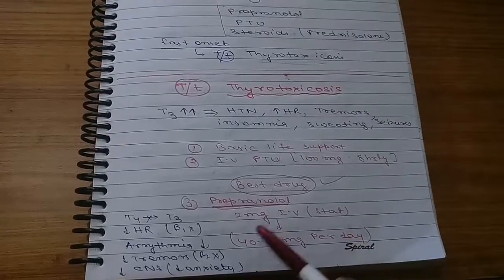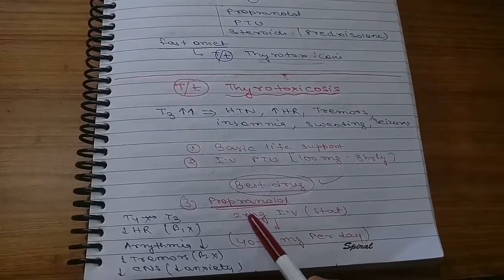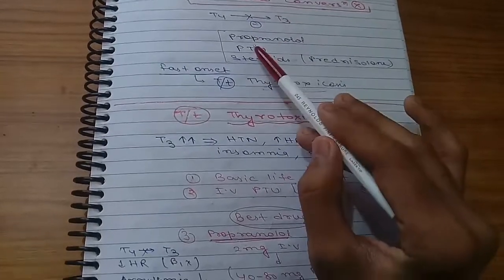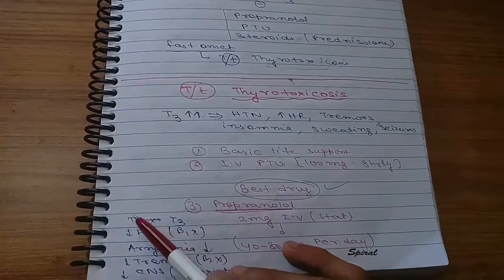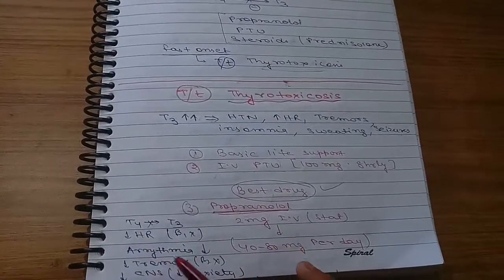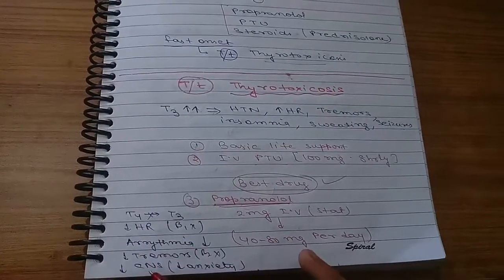This is the best drug for thyrotoxicosis. We will give propranolol, 2 mg IV. Propranolol will inhibit conversion of T4 to T3. It will also decrease heart rate, arrhythmia, tremors, and anxiety. So these symptoms can be controlled by propranolol.